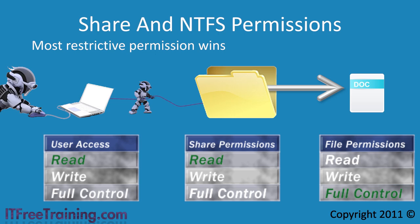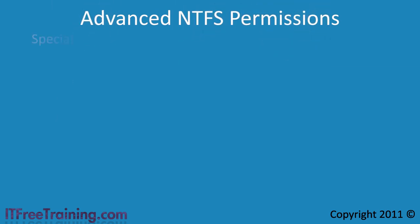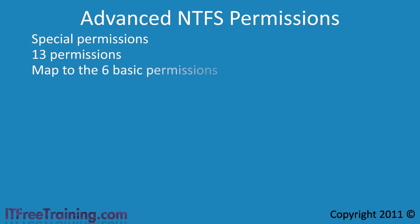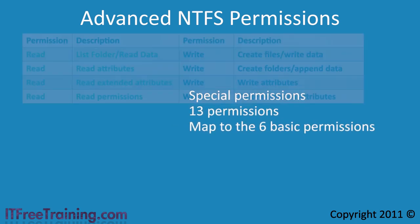In the last video I looked at the standard NTFS permissions which gave you 6 basic permissions to choose from. If you need more control over your files and folders, you can assign them advanced permissions, often referred to as special permissions. This gives you 13 permissions to choose from, and these 13 permissions map to the 6 basic permissions covered in the first video.